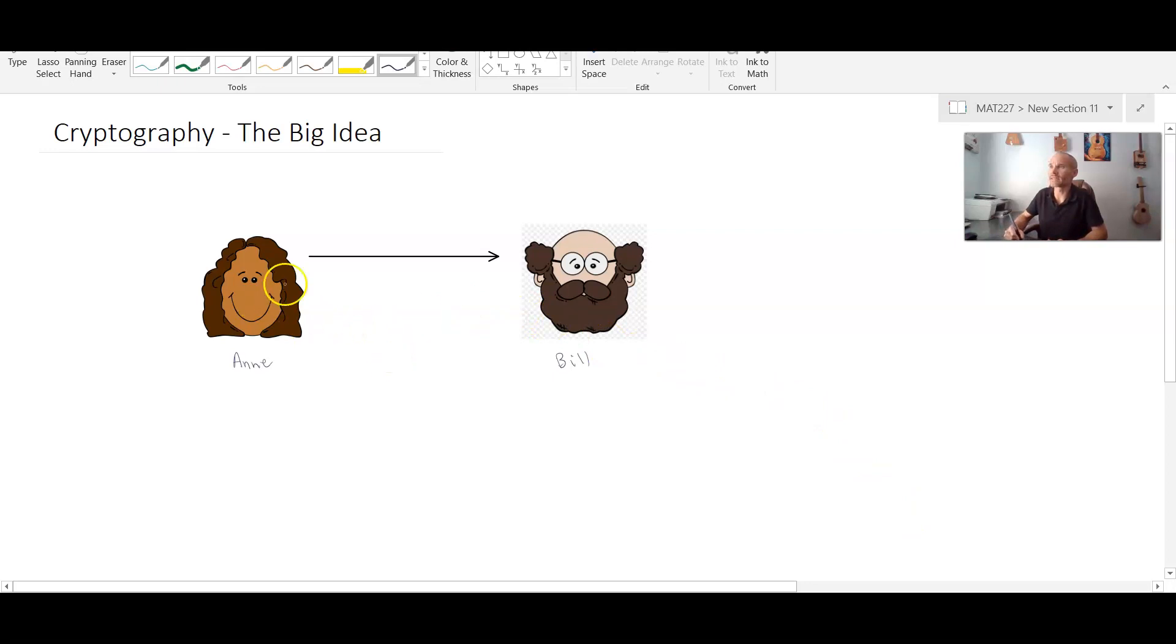So in order for Ann to send the message let's suppose that we call her message P. Okay so we often call this P because P stands for plain text. And all a plain text value is is the original message. In the scope of cryptography that's going to be a set of values. For now let's just pretend this is one value.